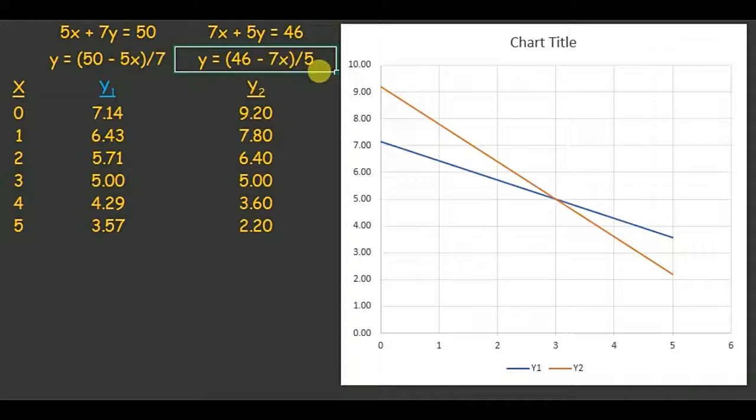Now I have these x values here, smaller values from 0 to 5. Replacing x with these values gave me these y values. Replacing x with the same values in the second equation gave me these y2 values.